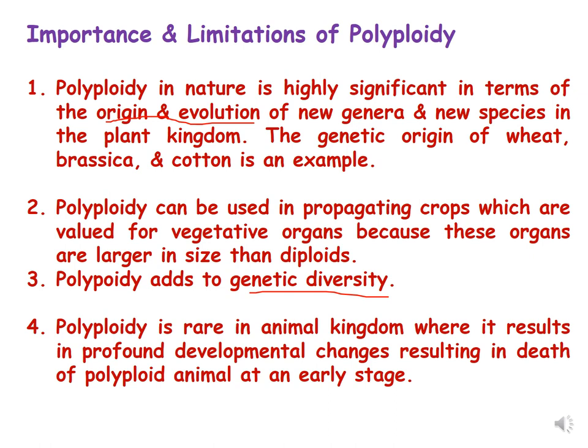Polyploidy can be used to propagate crops valued for vegetative organs, because these organs are larger in polyploids than in diploids due to the extra chromosome sets — making even sterile polyploids beneficial when vegetatively propagated. Polyploidy also adds to genetic diversity, as many new crop species have been developed this way. However, polyploidy is rare in the animal kingdom, where it results in developmental changes causing death of the polyploid animal at an early stage.